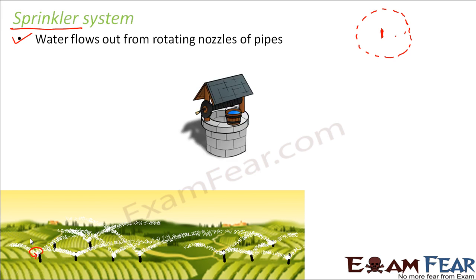There are perpendicular pipes with rotating nozzles on top, all located at specific distances. These nozzles move in a circular path. Such pipes are joined to the main pipeline. Let us imagine this is the well, and inside the well you have a motor.